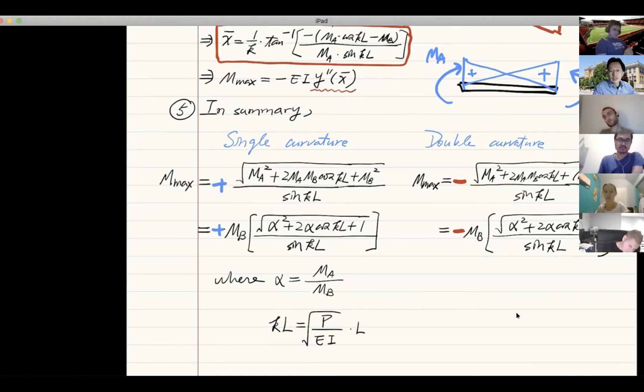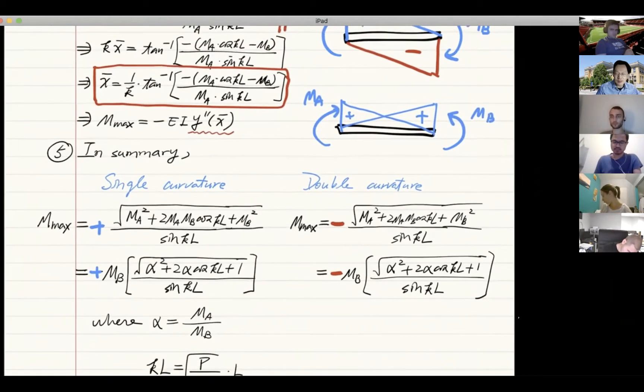You can use this equation for maximum moment to determine the maximum moment at any values of axial force, because in this case P doesn't have to be PE—P can be any value. If on the exams you're provided with a value of P, EI, and the length, you should be able to calculate the numerical value of KL.